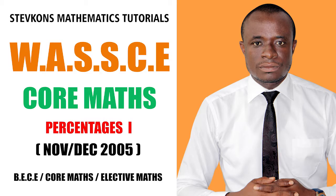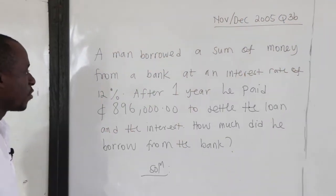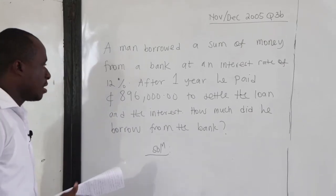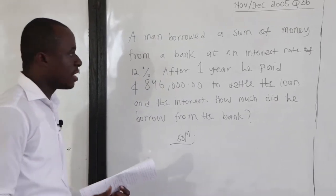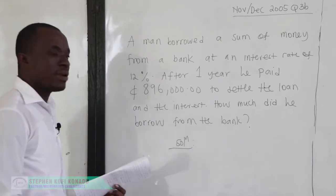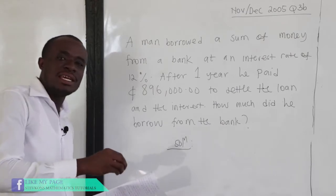Let's consider this. This is Novdex 2005, question number 3b. You are being told a man borrowed a sum of money from a bank at an interest rate of 12%. Now you are being told that after one year, he paid $896,000 to settle the loan and the interest.